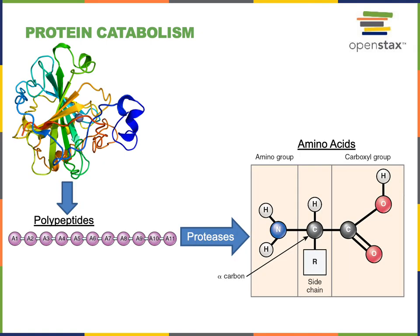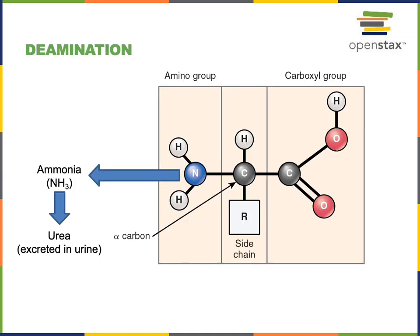After proteases have catalyzed the hydrolysis of the peptide bonds, releasing amino acids from polypeptides, those amino acids could be used in translation to synthesize new polypeptides, or those amino acids could be broken down further to generate ATP or be used for gluconeogenesis. Deamination is the removal of the nitrogen-containing amino group from an amino acid. Deamination is required before an amino acid can be used in gluconeogenesis or broken down further in order to generate ATP.